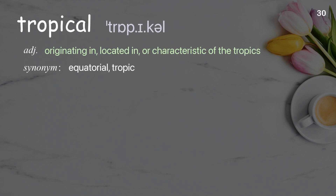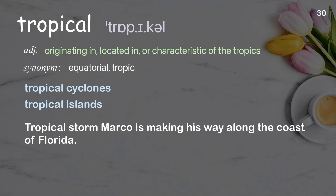Tropical: originating in, located in, or characteristic of the tropics. Examples: tropical cyclones, tropical islands. Tropical storm Marco is making his way along the coast of Florida.